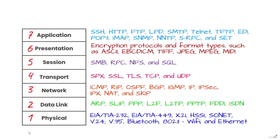The first layer is the physical layer. The physical layer is the lowest layer of the OSI model and is concerned with electrically and optically transmitting raw and structured data bits across the network from the physical layer of the sending device to the physical layer of the receiving device. It can include specifications such as voltages, pin layout, cabling, and radio frequencies.